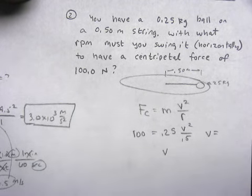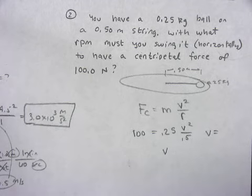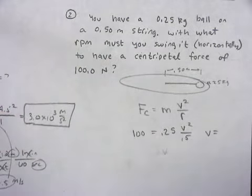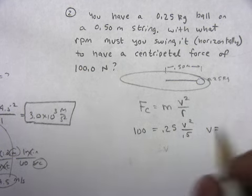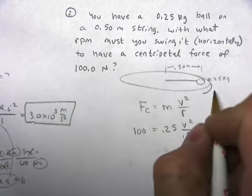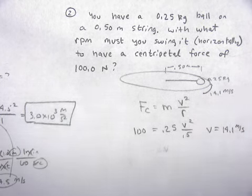So my velocity is going to be 14.1. This thing's cruising around here at 14.1 meters per second.